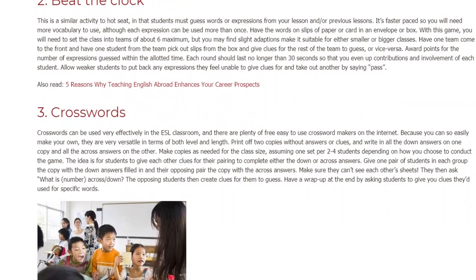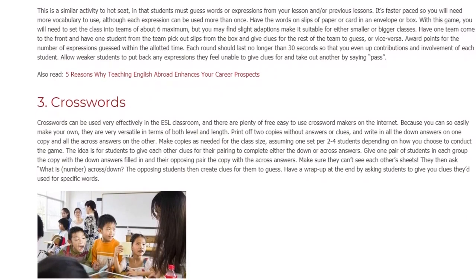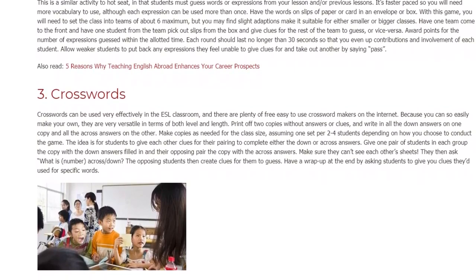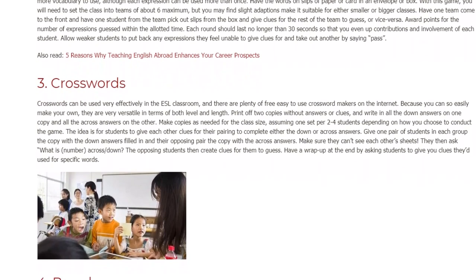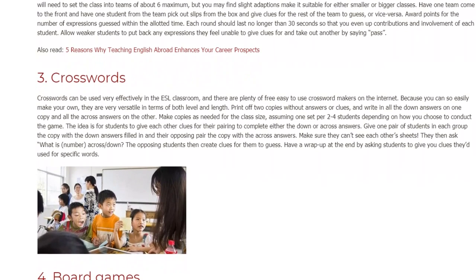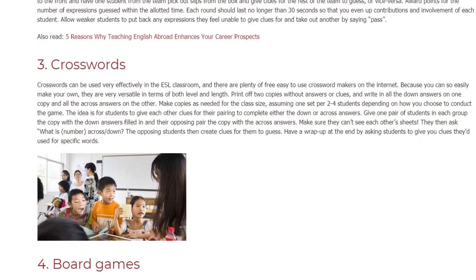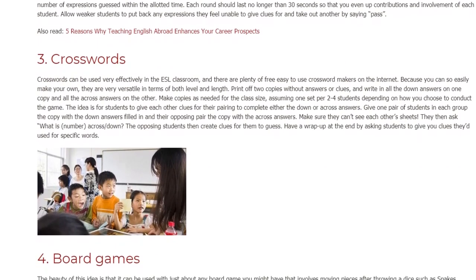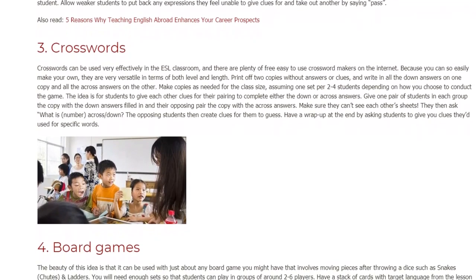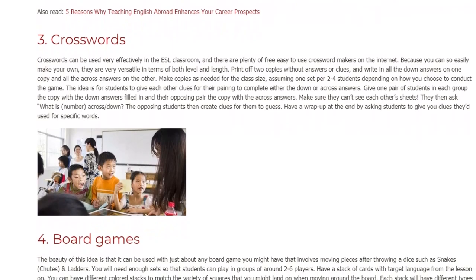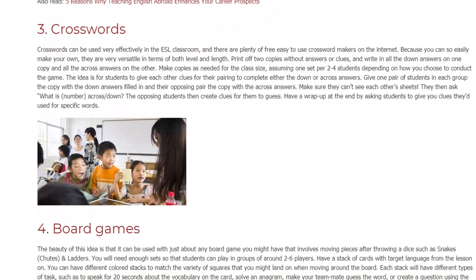The idea is for students to give each other clues for their pairing to complete either the down or across answers. Give one pair of students in each group the copy with the down answers filled in and their opposing pair the copy with the across answers. Make sure they can't see each other's sheets. They then ask 'What is number ___, across/down?' and the opposing students create clues for them to guess. Have a wrap-up at the end by asking students to give you clues they'd used for specific words.